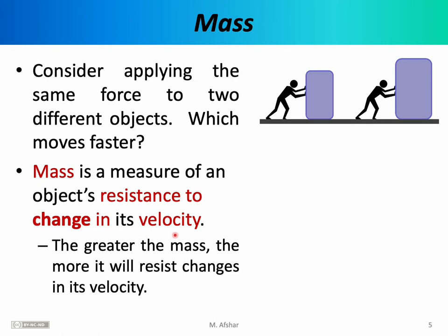An object that has a lot of mass will be very difficult to speed up, and once it has reached some speed, very difficult to slow down — like a very large truck. On the other hand, an object with very little mass will be easy to speed up and slow down, offering very little resistance to acceleration and very little resistance to changes in its velocity.